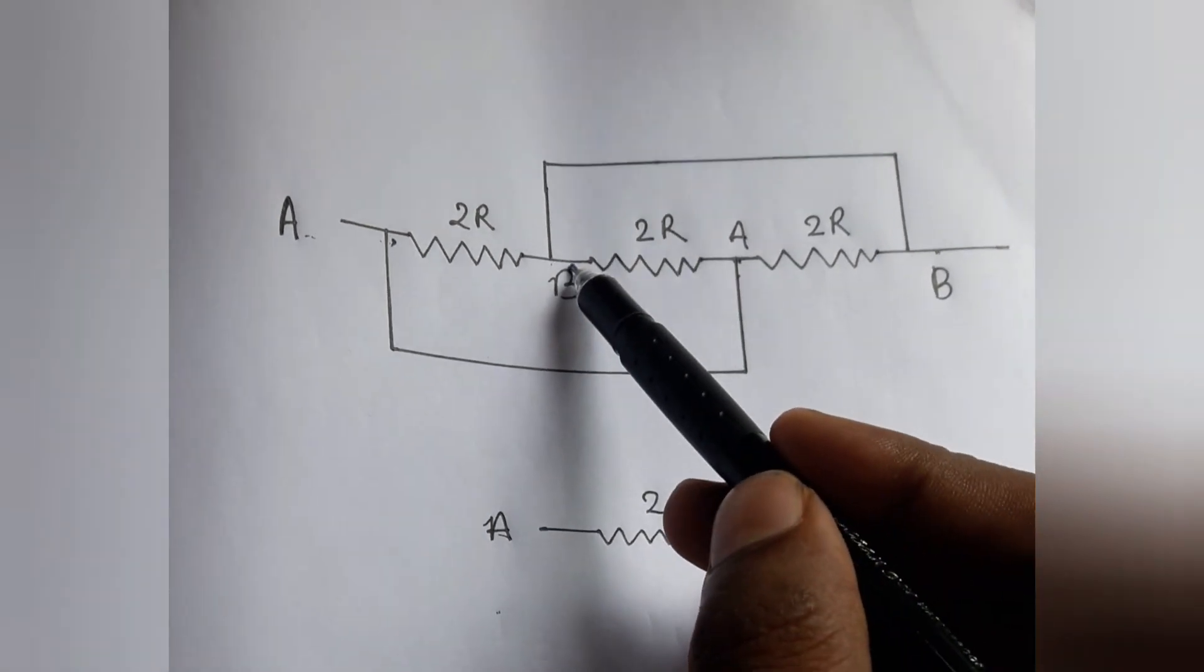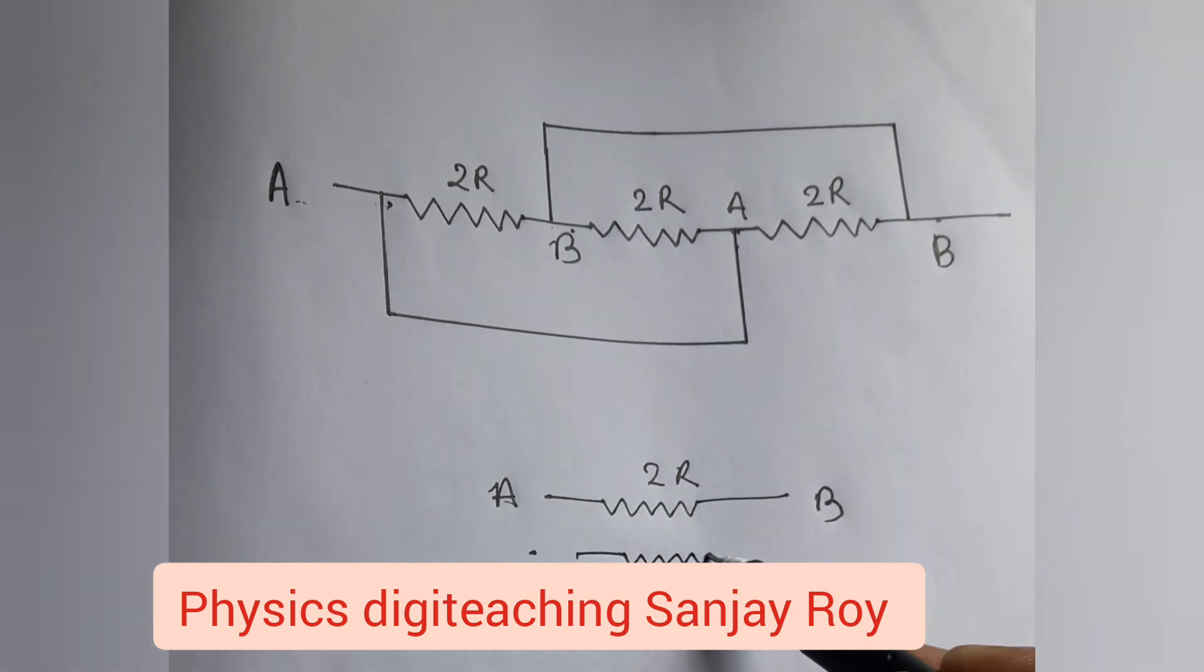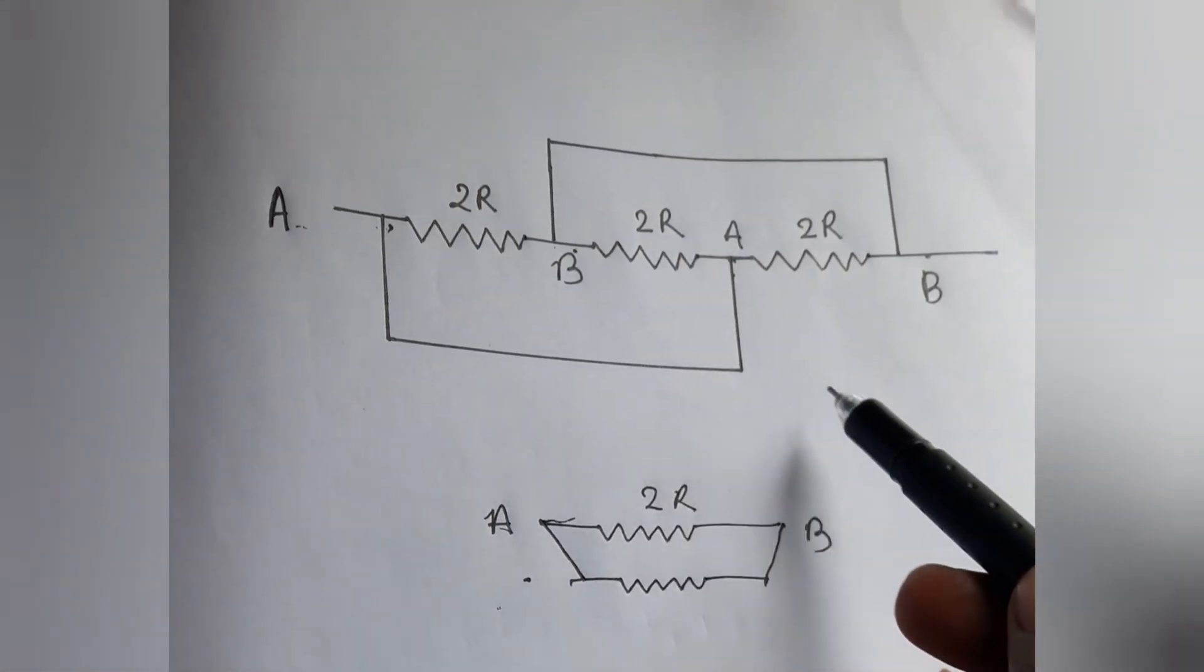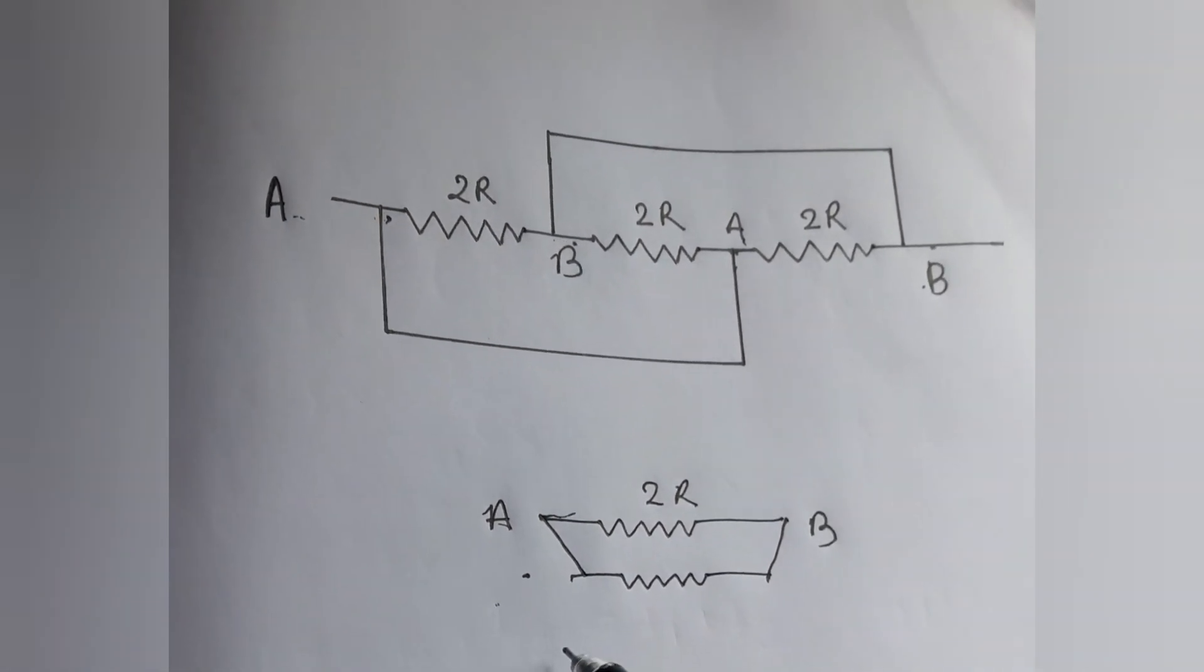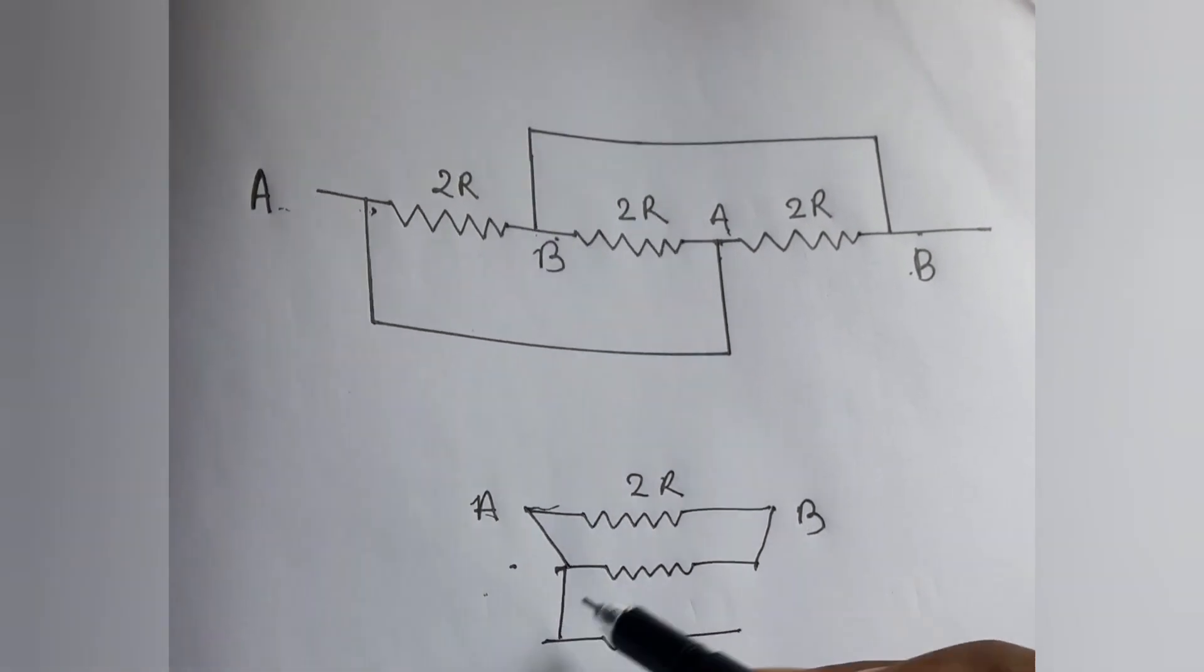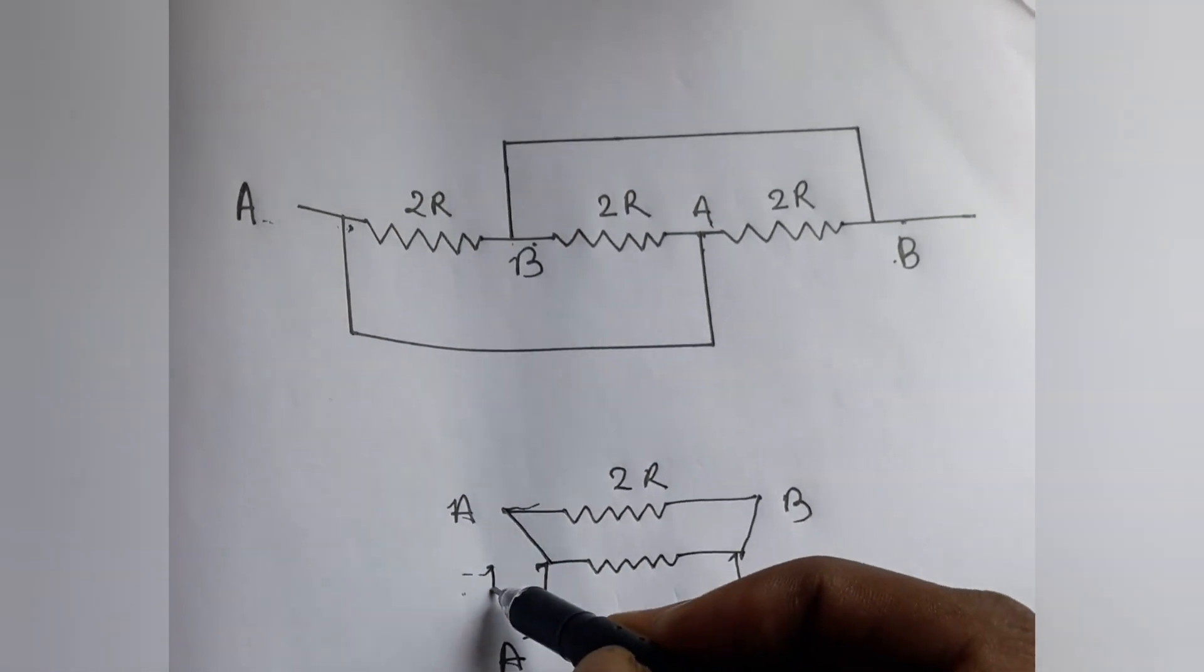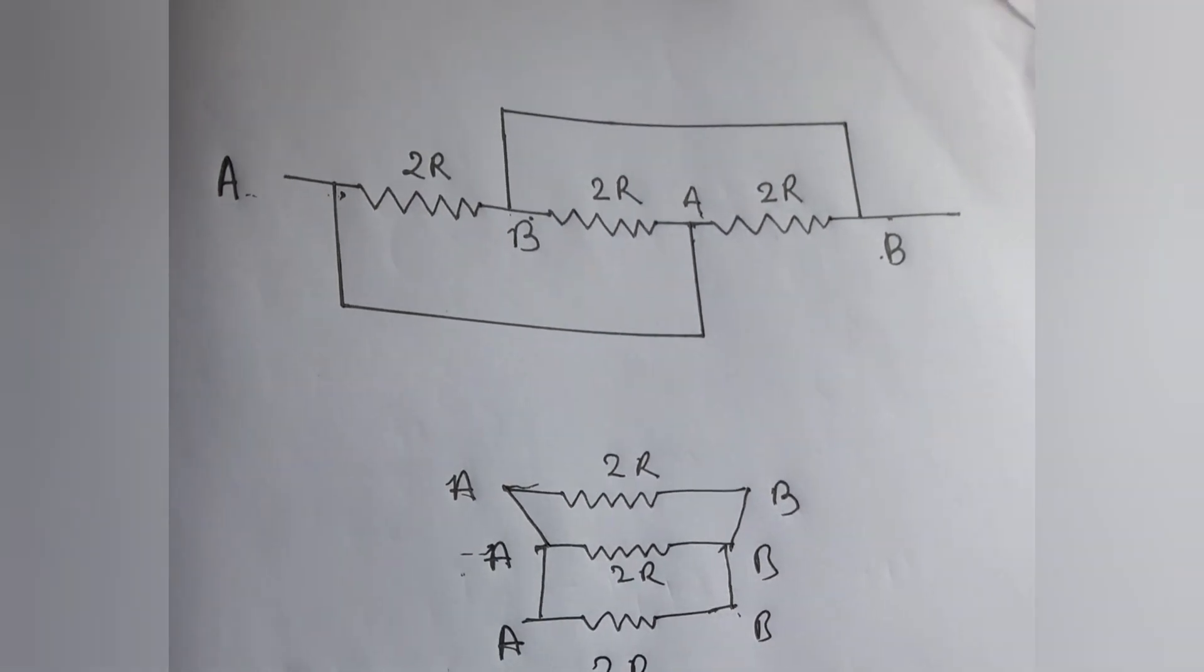Now see the second resistance 2R. This is the point A and this is the point B. Now we draw it - this is B and this is A. The second resistance 2R also has two ends A and B. Now we draw the third resistance 2R. This is A and this is B - 2R, 2R, 2R.